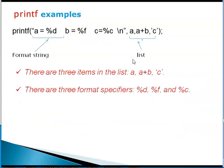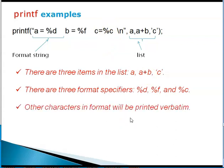Let us look at third example. In the third example, you have again a comma separated list of items: a, a plus b and character constant c. Because there are three items here, there must be three format specifications: percent d, percent f and percent c. Other than these percents, all the characters are printed exactly as they are. Here percent c is a format specification for character constants.